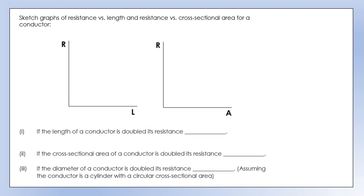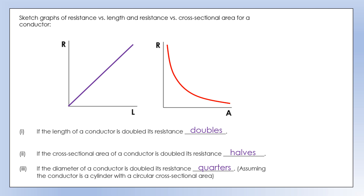Looking more generally at resistance: for a given wire, increasing its length increases resistance proportionally — doubling the length doubles the resistance. Increasing the cross-sectional area decreases resistance in an inversely proportional way — doubling the area halves the resistance. If the diameter is doubled, the cross-sectional area becomes four times bigger (since area is proportional to diameter squared), so resistance becomes a quarter of its original value.